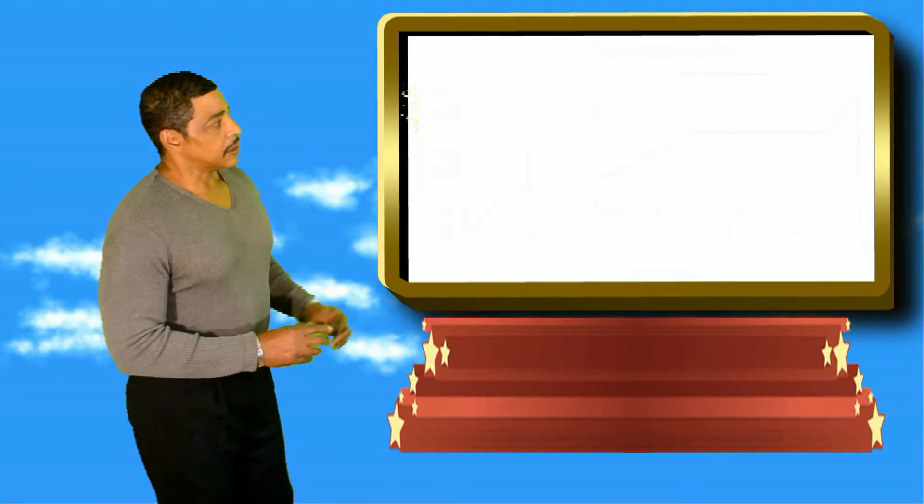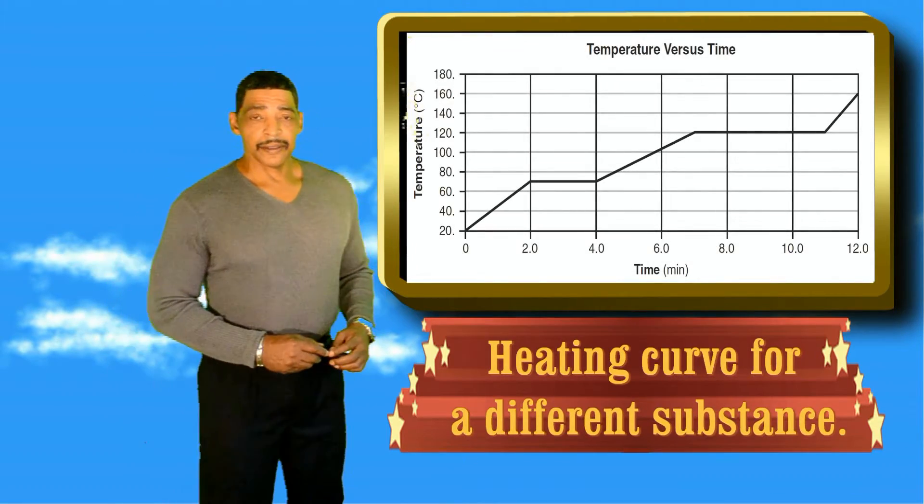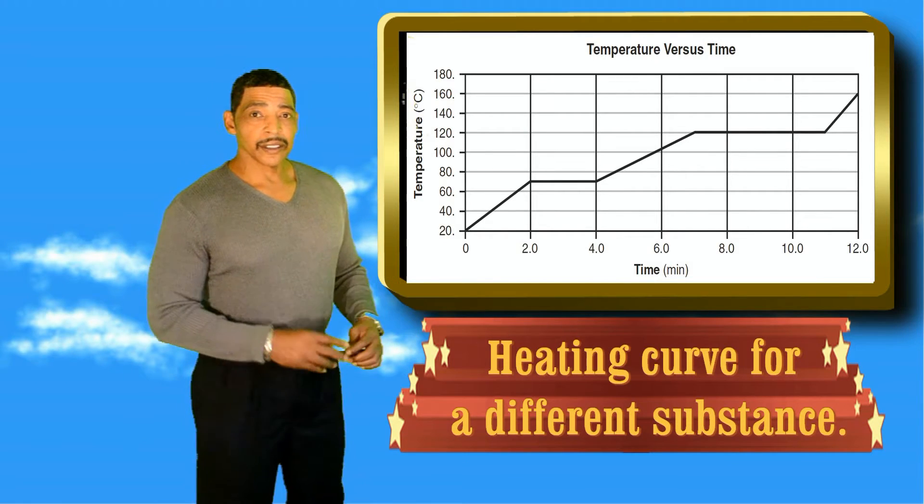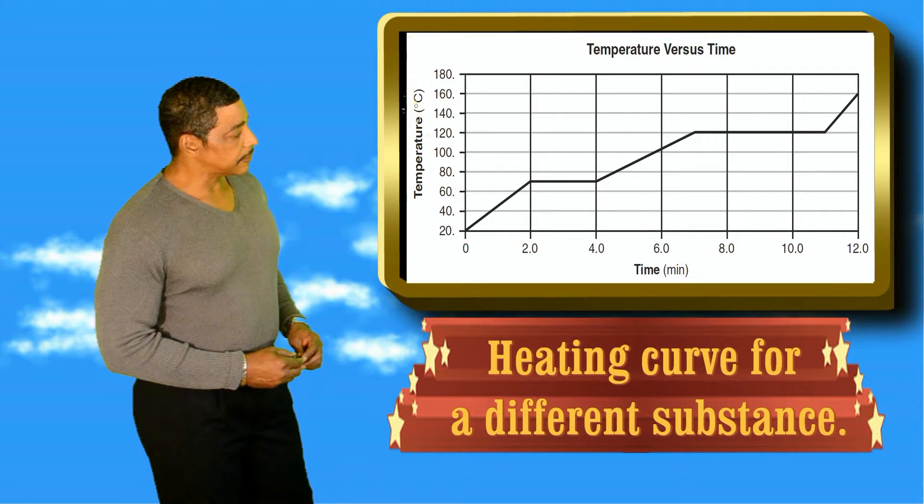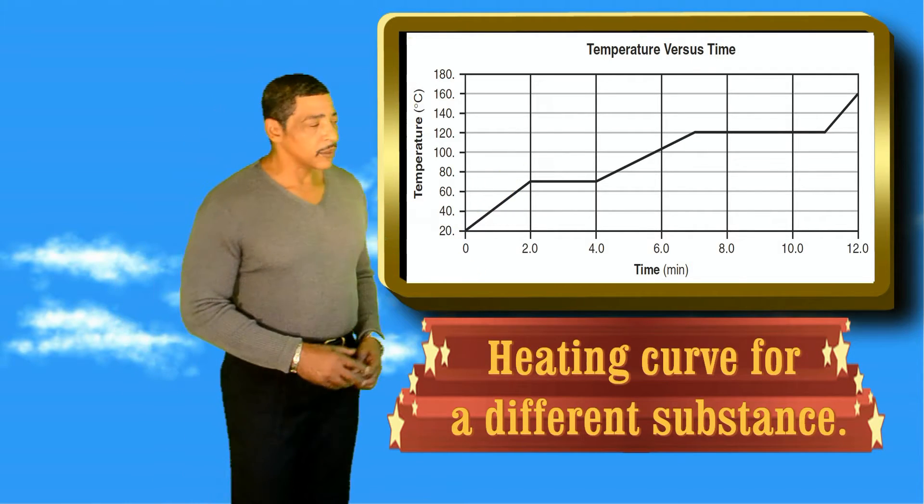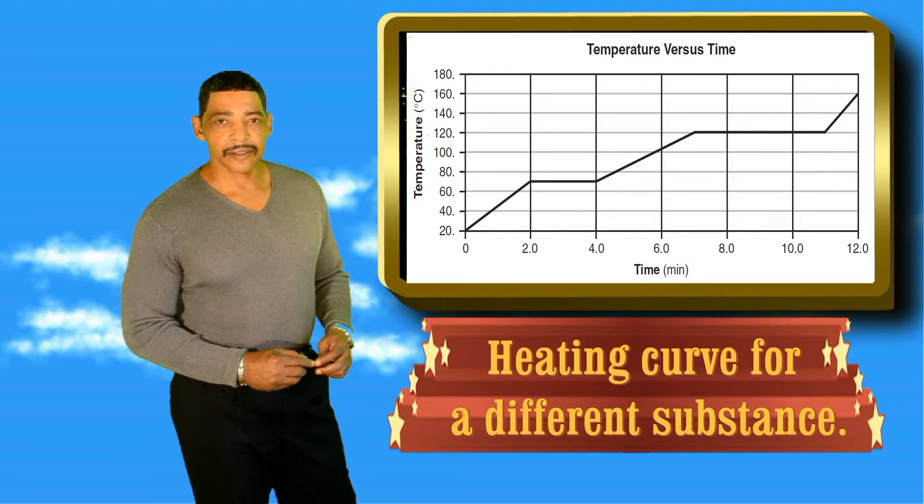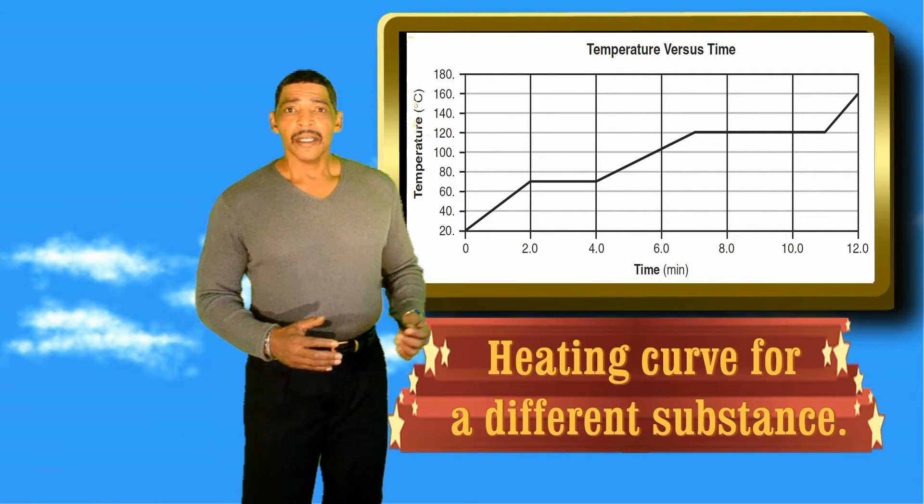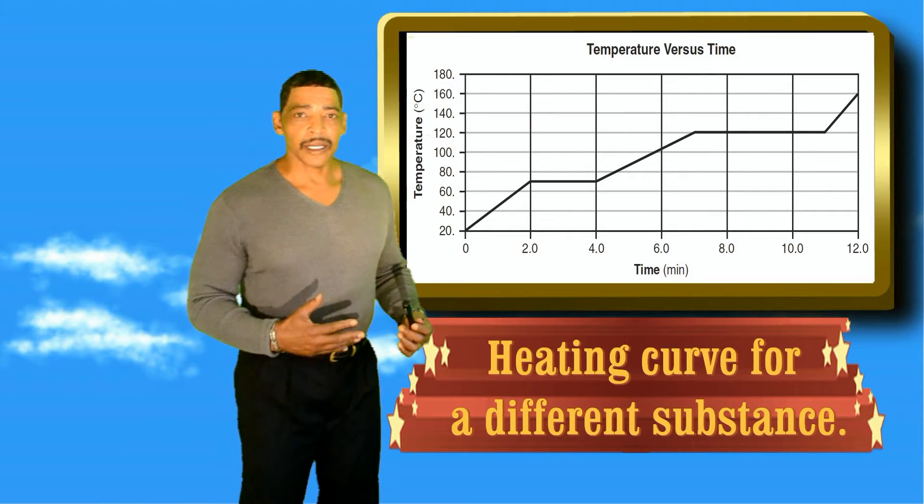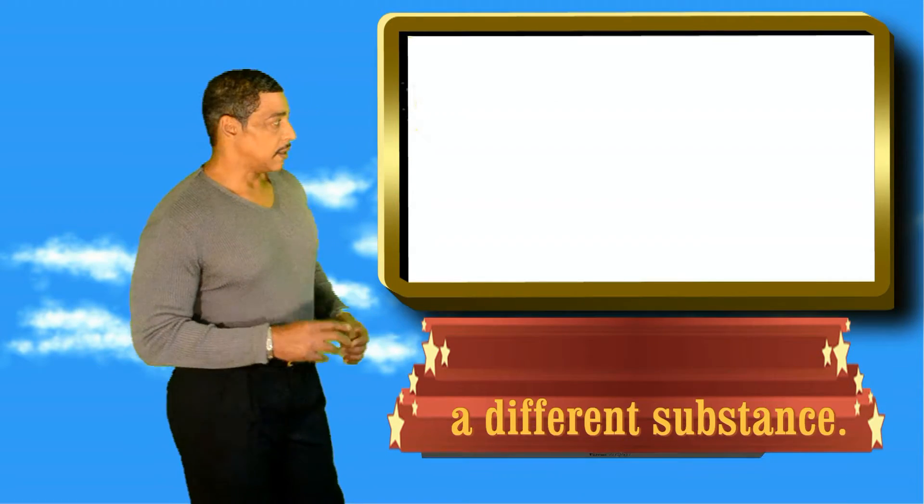This is an image of a substance other than water. How do I know this? Well, the plateaus, where one plateau occurs at 70 degrees Celsius, and the other plateau occurs at 120 degrees Celsius. Although this substance is not water, the general profile of the heating curve is the same.